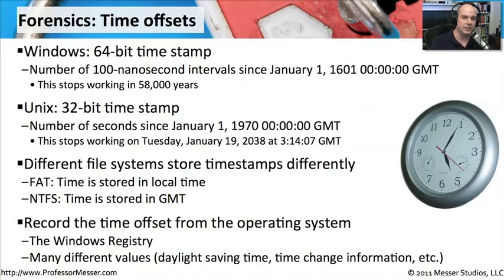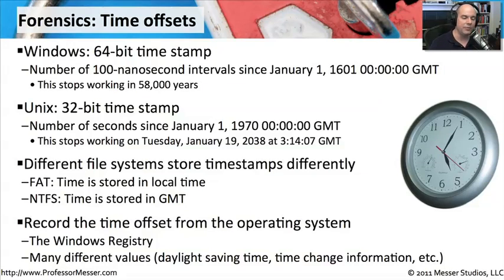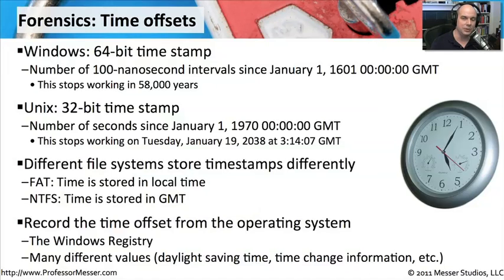When you sit down in front of these computers, you also need to know what time zone is configured on the computer, so that when you're looking at a screenshot of timestamps, you understand relative to GMT what the actual time is. You want to look at the Windows registry, which is the ultimate source of where this is stored in Windows. There are many different values in the registry — you can set a time, set your time zone, set whether daylight saving time is in effect, and whether time change information is updated automatically. By storing and looking at this data along with the clock offset, you'll be able to have everything trace back to one relative timestamp.